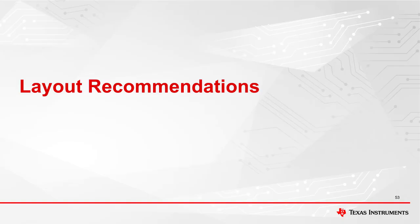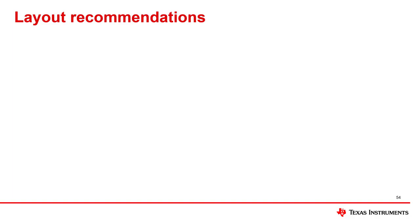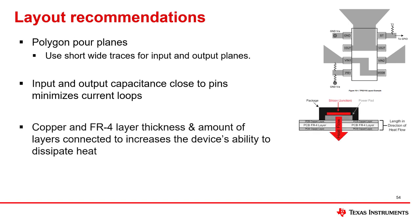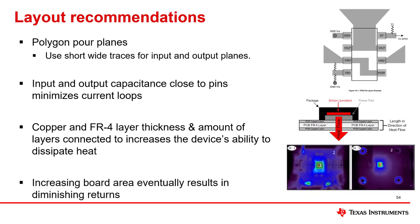Once you have completed your schematic with one of TI's power mux devices, next is layout. We recommend the following: high power paths should always have polygon pour planes to allow for current flow and heat dissipation. For high current applications, place vias under input and output pins to avoid current density and thermal resistance bottlenecks. Input and output capacitors should be located close to VIN and VOUT pins to reduce parasitic inductance and minimize current loops. Increasing copper thickness will allow greater heat dissipation, though increasing board area eventually results in diminishing returns as the bottleneck becomes the device's resistance.